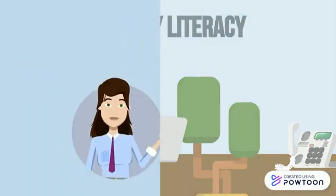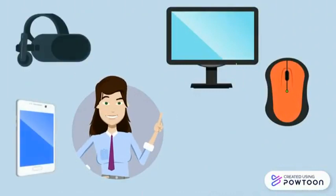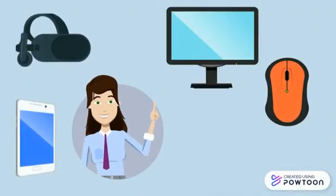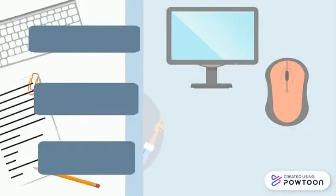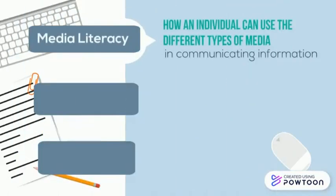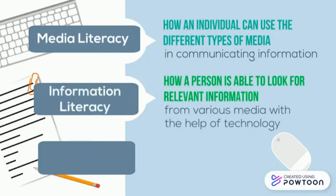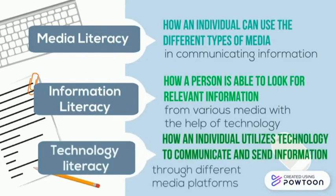This literacy skill is expected to be more complex and progressive as people demand faster and easier access to communication and information. To recap: media literacy refers to how an individual can use different types of media in communicating information. Information literacy refers to how a person is able to look for relevant information from various media. Technology literacy pertains to how an individual utilizes technology to communicate and send information through different media platforms.